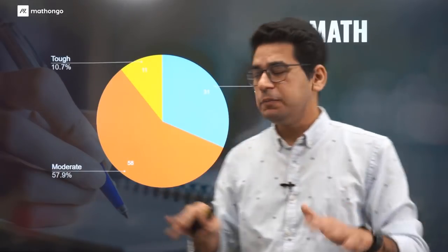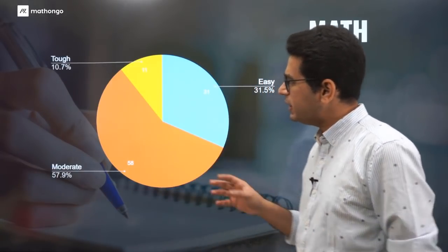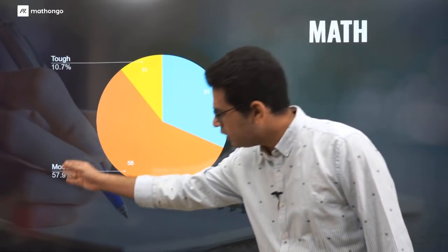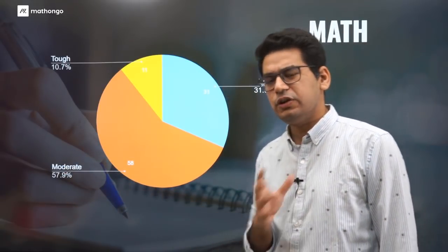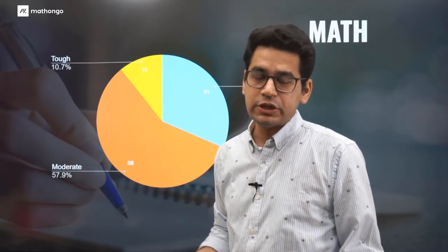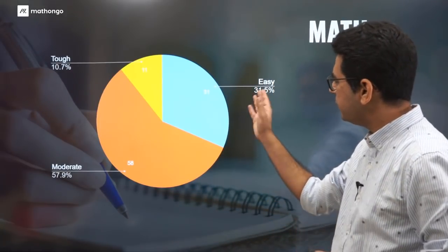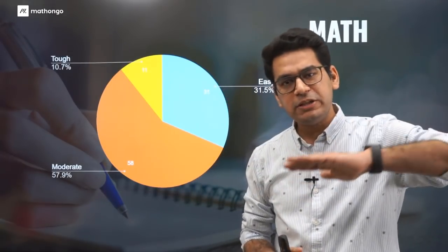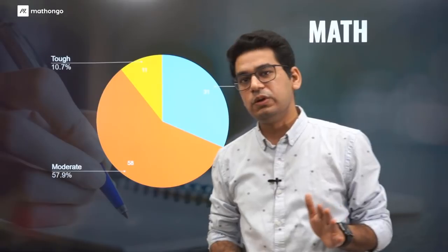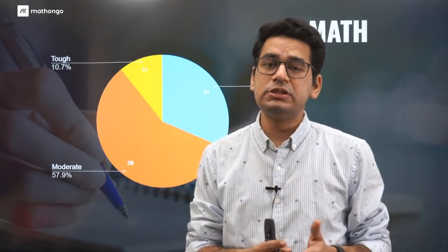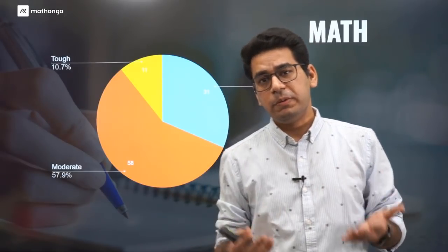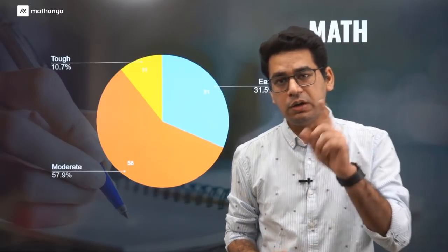Coming to the other half of the paper, mathematics. Mathematics is again mostly on the moderate side, 58% of the paper is moderate, which I guess everybody understands. Every paper is designed this way. 31% is easy and 10% is almost tough. So 10% is a benchmark, only 10% of the paper is tough. So when 90% is easy or moderate, why doesn't the paper get solved? Because speed is also an important factor here.